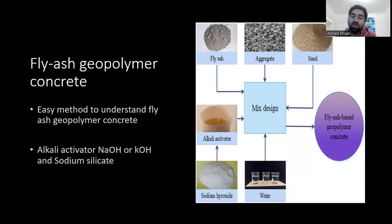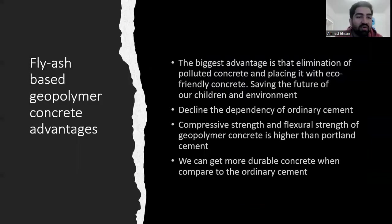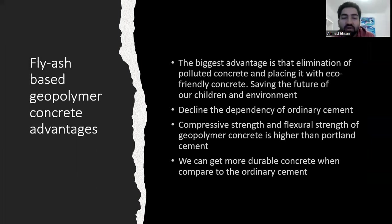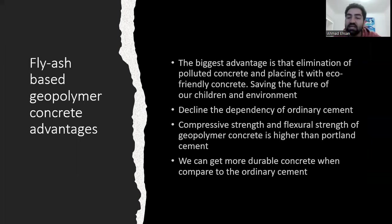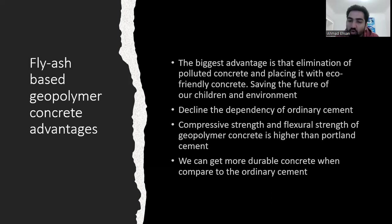By mixing these, we get geopolymer concrete. The big advantage of fly ash-based geopolymer concrete is the elimination of bloated concrete and replacing it with an eco-friendly concrete, which can save our world for children and the environment. It declines dependency on ordinary concrete. Compressive strength and flexural strength are higher in geopolymer concrete compared to Portland cement, and we can get more durable concrete as well.